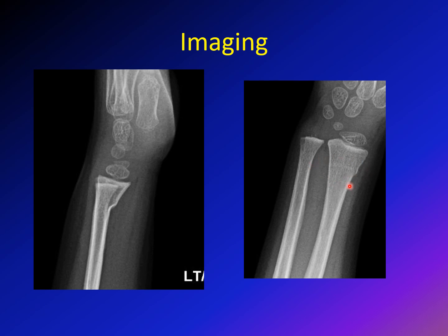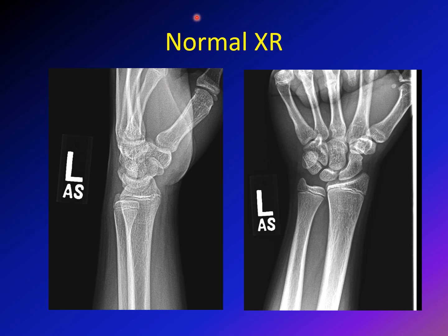You can see the small knob in the AP, but by far it is much more obvious in the lateral view — failure in compression while the dorsal cortex is intact. Here is a normal X-ray of the wrist for comparison. You can see the lateral and the AP views. The cortices should be smooth with no buckling, no signs of any compression fracture, and no interruption of the cortex.